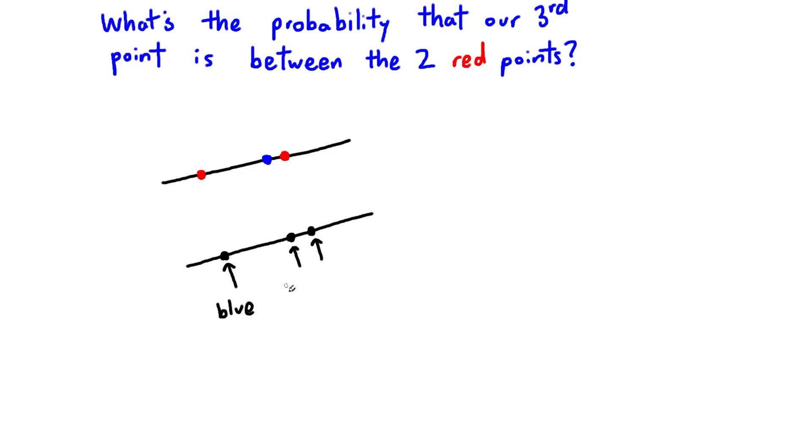In fact, we might as well just pick three points, and then randomly assign one to be blue and the other two to be red. After all, that's basically the same thing as picking two random red points, then picking a random blue point.